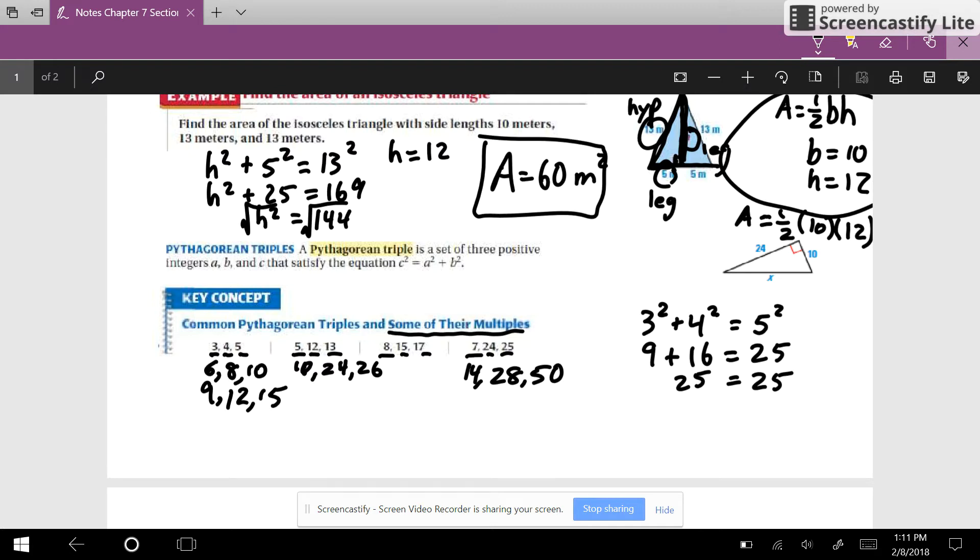And you'll notice as you do the assignment that you'll find that. So you'll have a Canvas quiz. This is Section 7.1, so you'll want to do the 7.1 Canvas quiz as your assignment.